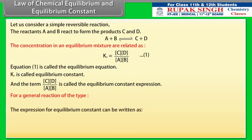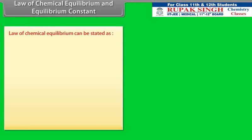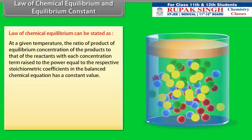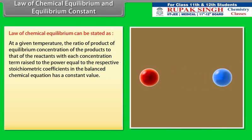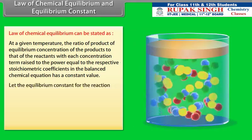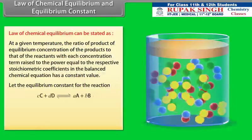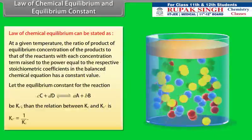For a general reaction, the equilibrium constant expression can be written in terms of Kc, expressed in concentration units of mole per liter. The law of chemical equilibrium states that at a given temperature, the ratio of the product of equilibrium concentrations of products to that of reactants, with each term raised to the power of the respective stoichiometric coefficients in the balanced chemical equation, has a constant value. For the reverse reaction, the equilibrium constant Kc-dash equals 1 divided by Kc.